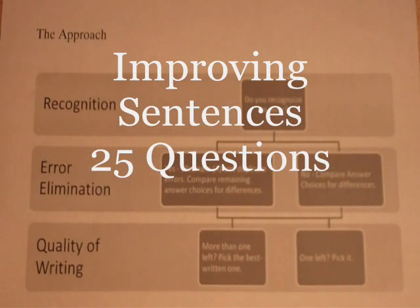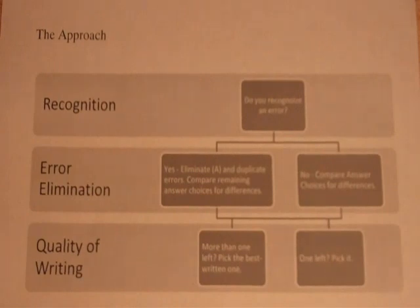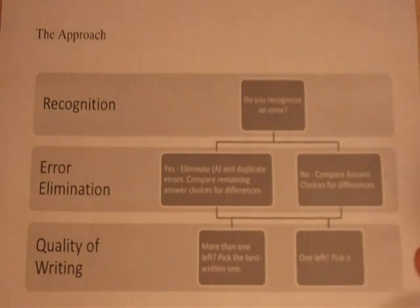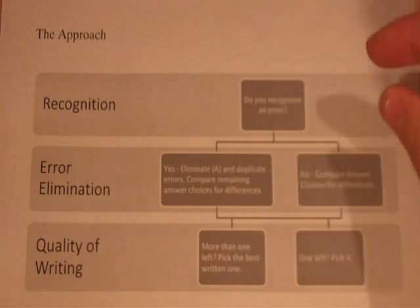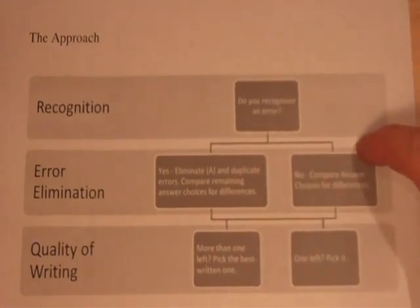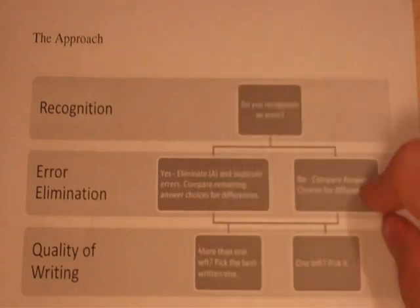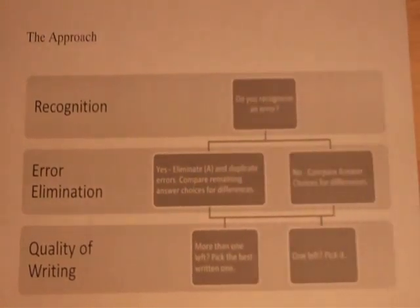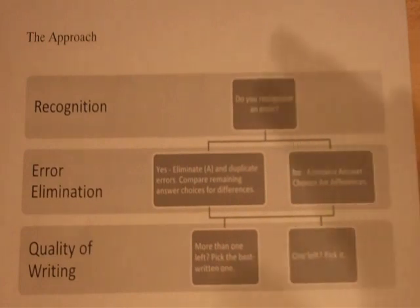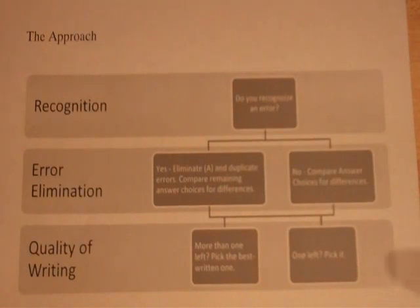Now let's take a look at improving sentences. Improving sentences give you a sentence and ask you to fix it if necessary. A lot of students actually like these more because you don't have to spot the error immediately — you have answer choices to use for reference. First, just like the other questions, ask: do I recognize an error? If yes, get rid of A — A means no error, it's exactly as written in the sentence. Then look for other answer choices that have that same error and eliminate them.